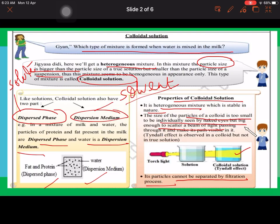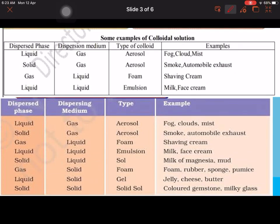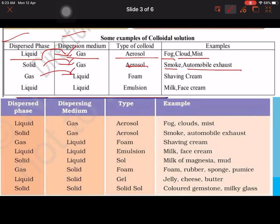We have a table showing dispersed phase and dispersion medium to identify the type of colloid. If liquid is dispersed in gas, we get aerosol like fog, cloud and mist. If solid is dispersed in gas, we get aerosol like smoke or exhaust. If gas is dispersed in liquid, it forms foam like shaving cream. If liquid is dispersed in liquid, it forms emulsions like milk and face cream. This table is inside the NCERT which is very important.